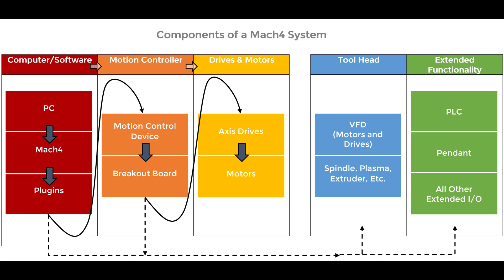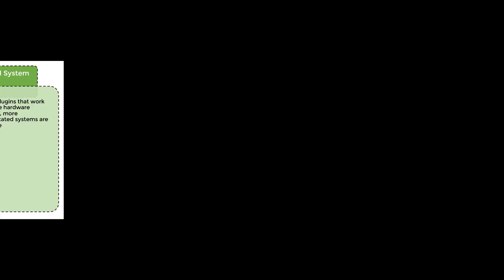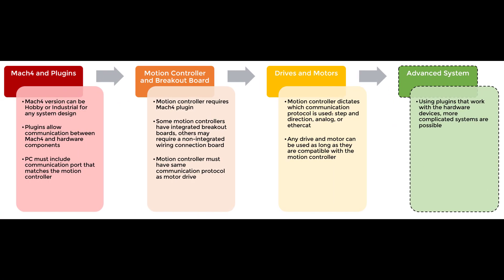Now let's talk about how these components all work together in a CNC system. Going in order, we first have Mach 4 and its plugins. Mach 4 acts as a unified interface for your system — it is how you, the user, interact with everything else. It can be easily customized and it remains constant despite any hardware changes you might make.